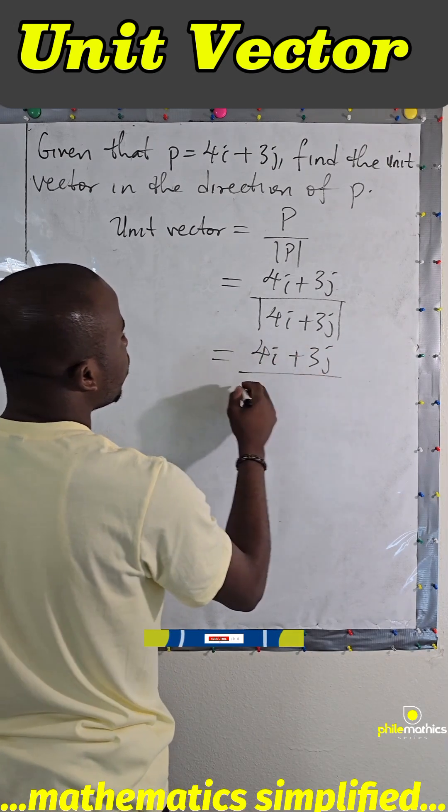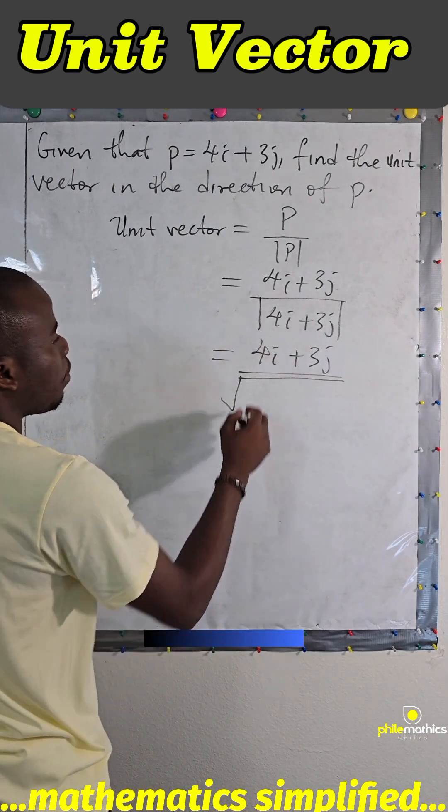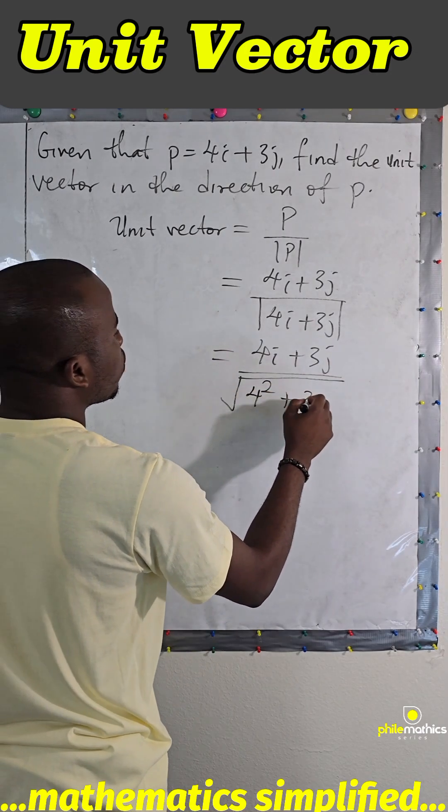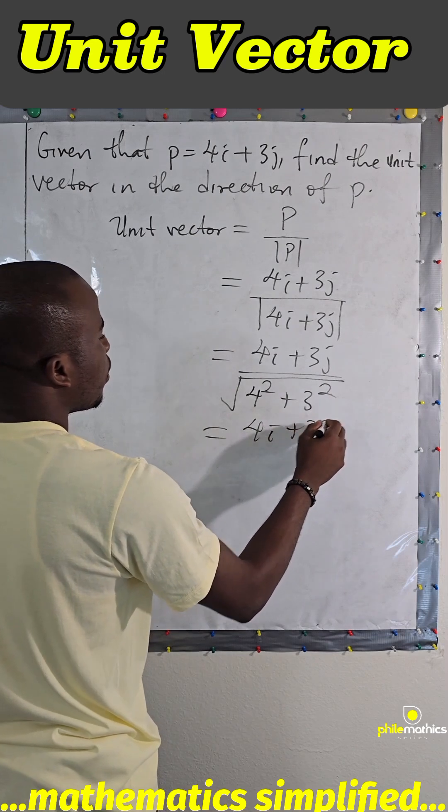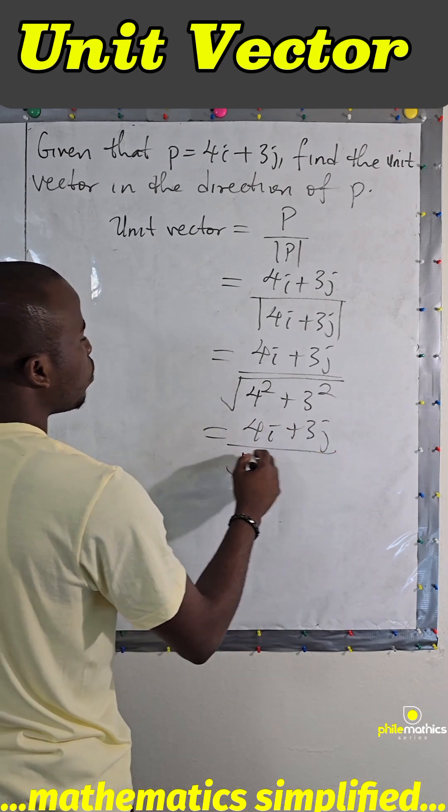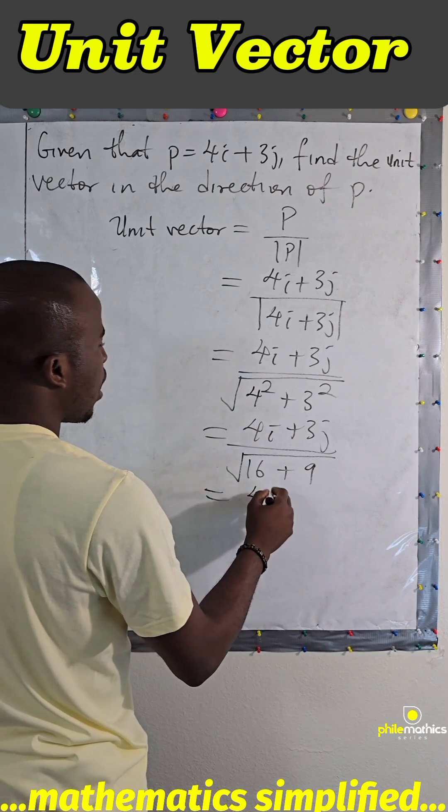In maths, it's simply the square root of the sum of the square of the individual terms. So 4 squared plus 3 squared. This is 4i plus 3j over square root of 16 plus 9.